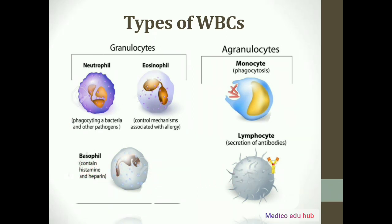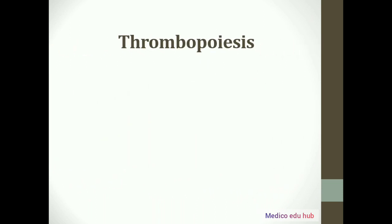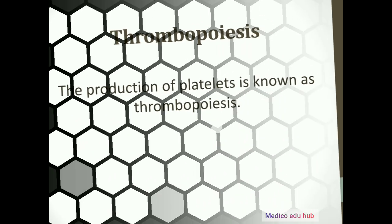Now we have completed WBC. Let's move towards thrombocytes, which are commonly known as platelets. Number one is shape: platelets are biconcave and non-nucleated. The total lifespan of platelets is 3 to 7 days. The normal count of platelets is 1,50,000 to 4,00,000 platelets per microliter. The main function of platelets is to help in blood clotting. The production of platelets is known as thrombopoiesis — just as erythrocyte production is called erythropoiesis, and leukocyte production is called leukopoiesis.